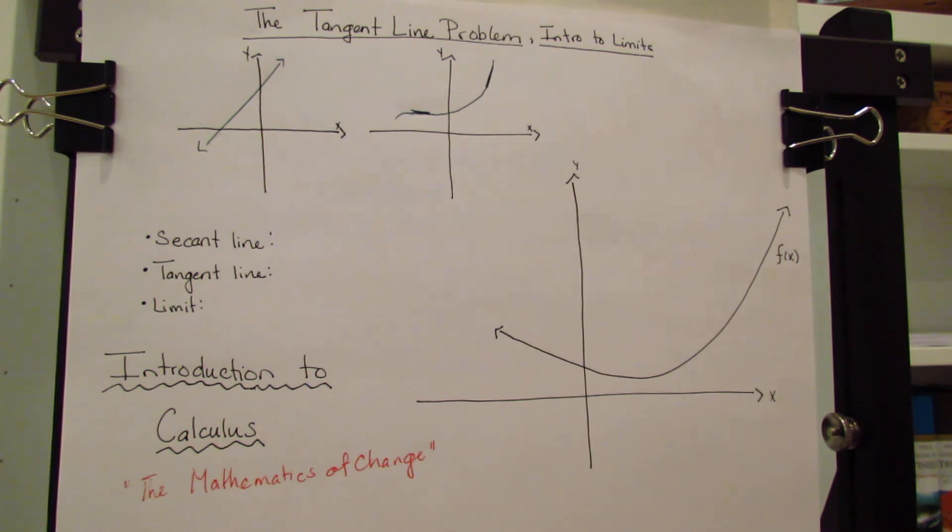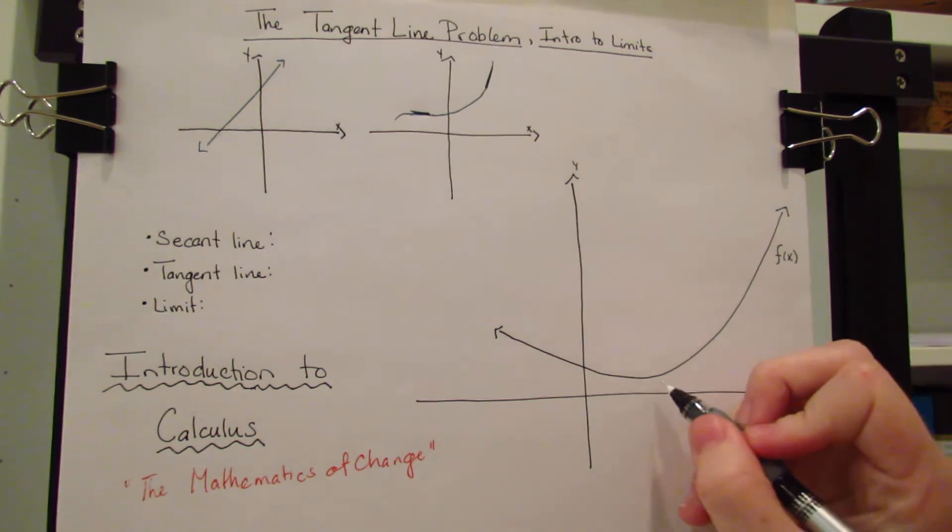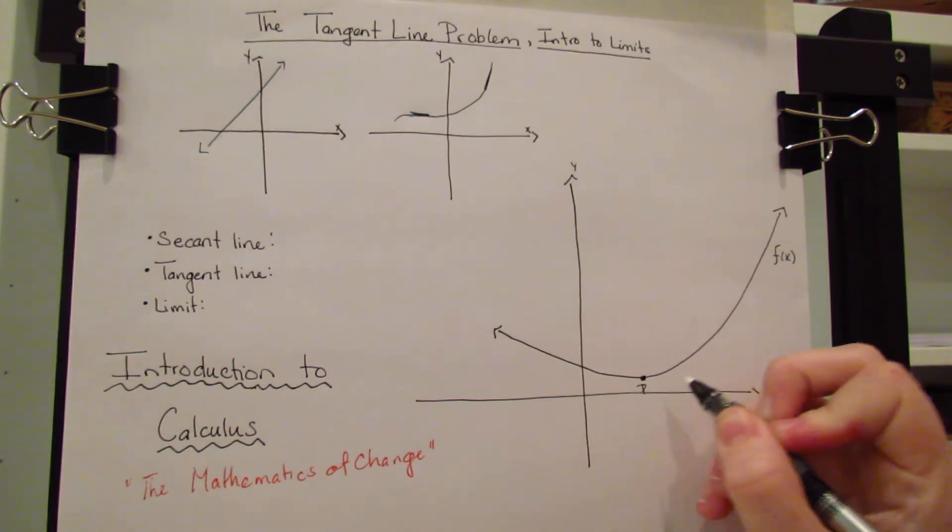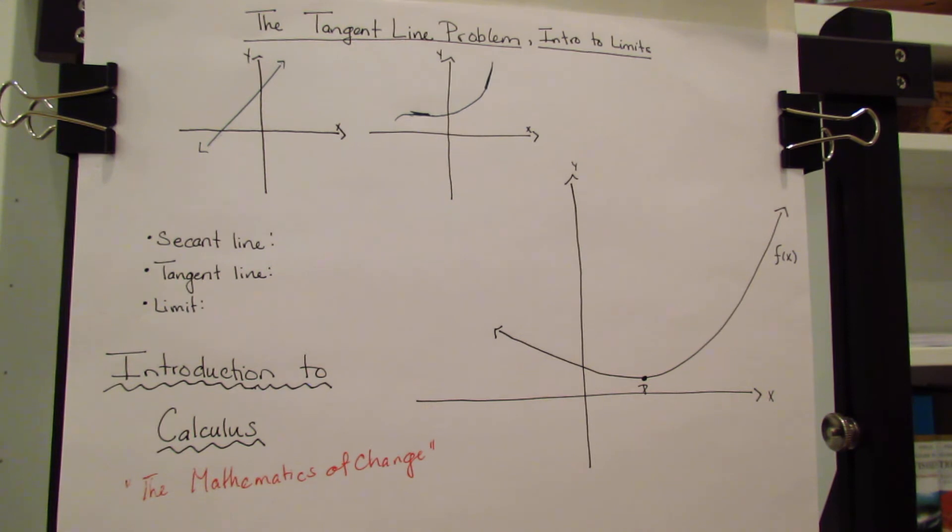So in order to talk about that, we'll start out with the tangent line problem. Let's say you have a point, we'll call this point P. And you want to know what the slope is.